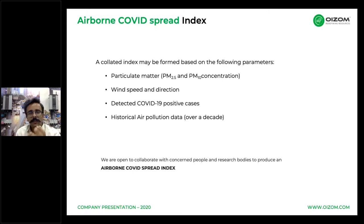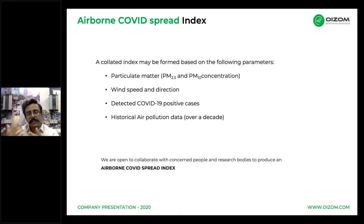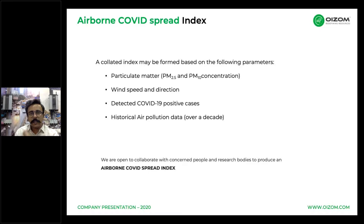Despite coronavirus being classified as non-airborne, its airborne effects via particulate matter need to be quantified. This is the Airborne COVID Spread Index we are working on, which includes particulate matter concentration, wind speed and direction, detected cases in a specific region, and historical air pollution data — since long-term exposure has been found to be a key factor. We are also open to collaborate with research bodies to make this index useful for stakeholders.